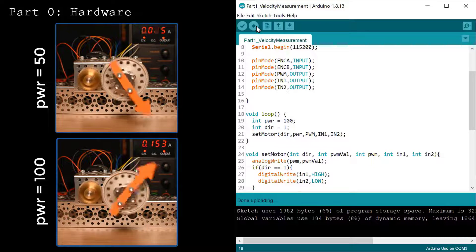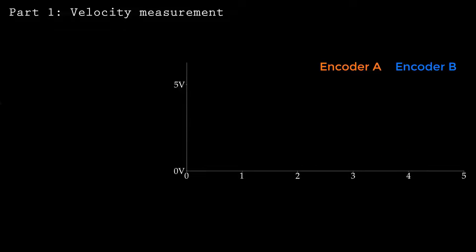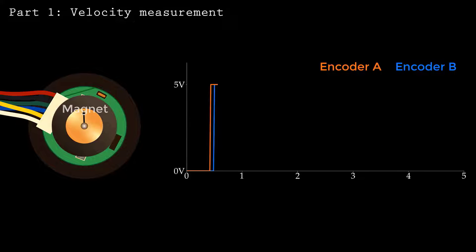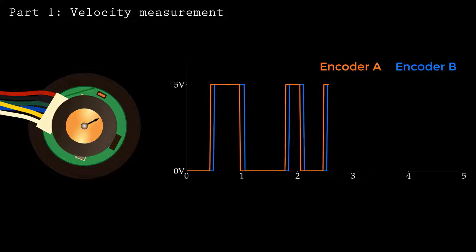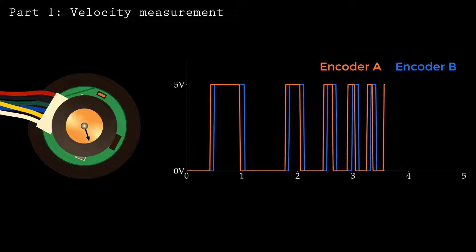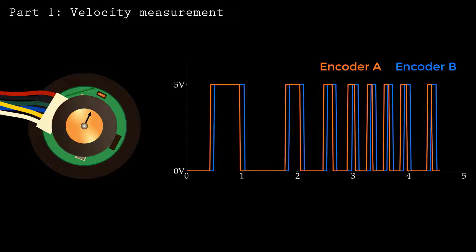I'll use a magnetic encoder for this purpose. An encoder works by measuring changes to the magnetic field created by a magnet attached to the motor shaft. When the motor shaft rotates, the encoder outputs A and B switch between high and low logic values. The switching order determines the direction.